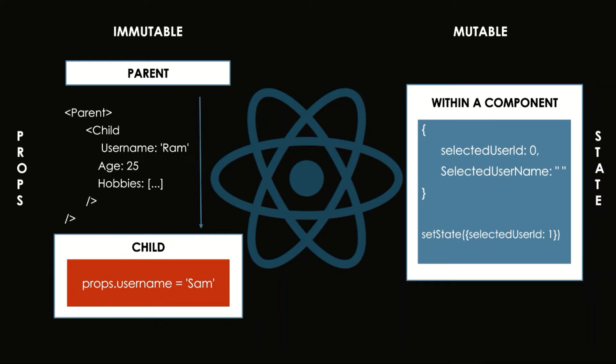Once props are passed to child components, they cannot be updated. Props are read-only and immutable. But components can update state values using setState in case of class based components, or using the function returned by useState hook in case of functional components.